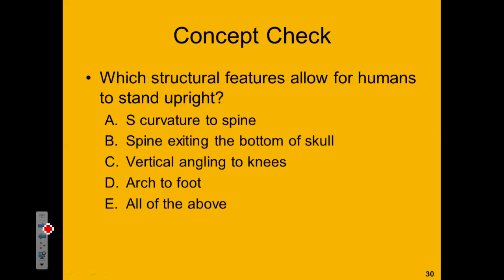Which of the following features allow for humans to stand upright? We have an S-curvature of the spine, spine exiting at the bottom of the skull, vertical angling to the knees, and arching on the foot — or E, all of the above. Go ahead and take some time to get me an answer. Pause the video or rewind if you need to.